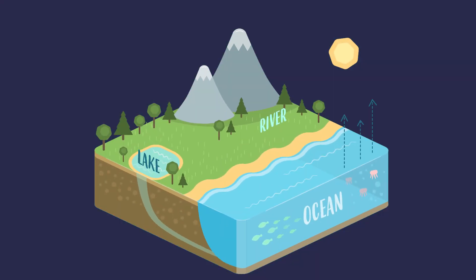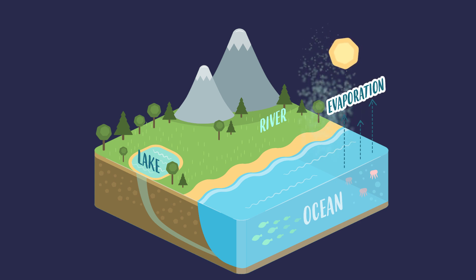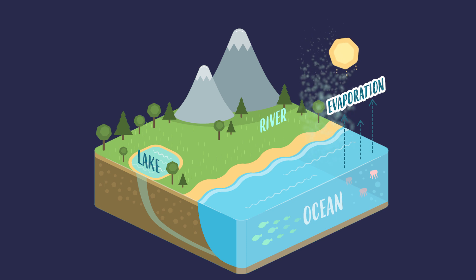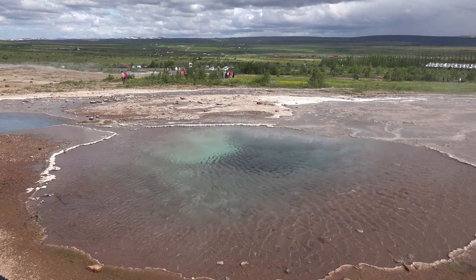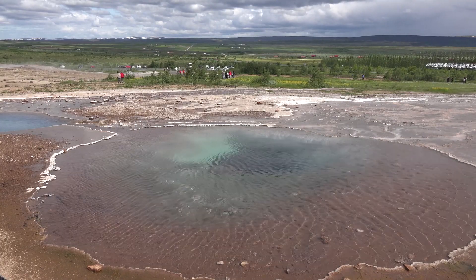The water cycle commences with evaporation. The sun heats the water a lot so it changes form — it changes from liquid to gas, to water vapor.